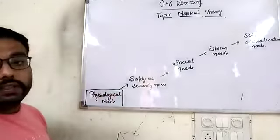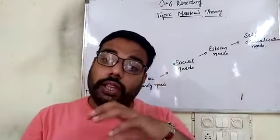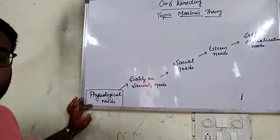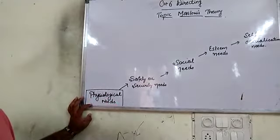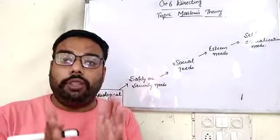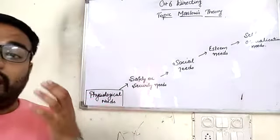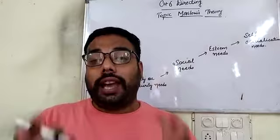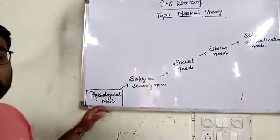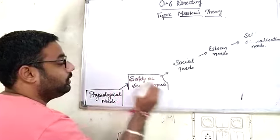The first need is physiological needs — the basic needs. Roti, kapra aur makaan — food, clothing, shelter, and education. These are basic needs that compel and motivate a person to work. A person first works because they are motivated by the need to fulfill their basic needs. Once the basic needs are satisfied, they move towards the second need.